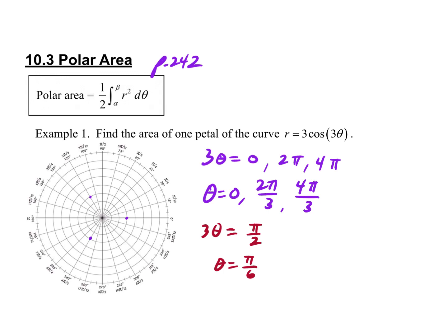That tells me the radius falls back to zero at θ = π/6. So the radius is at its maximum, then shrinks all the way to zero at π/6. That gives me the shape of one half of one petal. If I find the area from 0 to π/6 and multiply it by two, I will have the area of the entire petal.